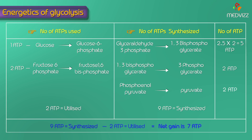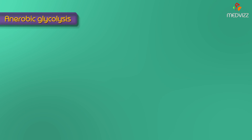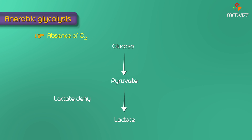In anaerobic glycolysis, in the absence of oxygen, pyruvate is converted into lactate by lactate dehydrogenase. The net ATP production in anaerobic glycolysis is 2, whereas in aerobic glycolysis the net ATP production is 7. This completes the discussion of both aerobic and anaerobic glycolysis.